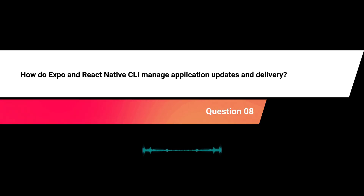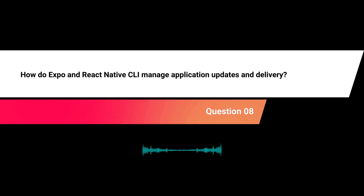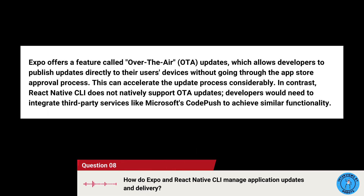How do Expo and React Native CLI manage application updates and delivery? Expo offers a feature called Over-the-Air (OTA) updates, which allows developers to publish updates directly to users' devices without going through the App Store approval process, which can accelerate the update process considerably. In contrast, React Native CLI does not natively support OTA updates — developers would need to integrate third-party services like Microsoft's CodePush to achieve similar functionality.